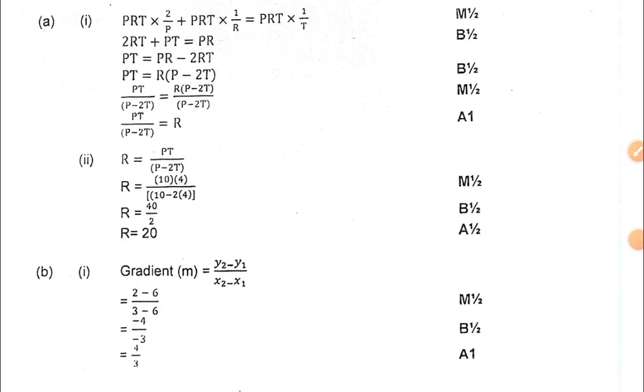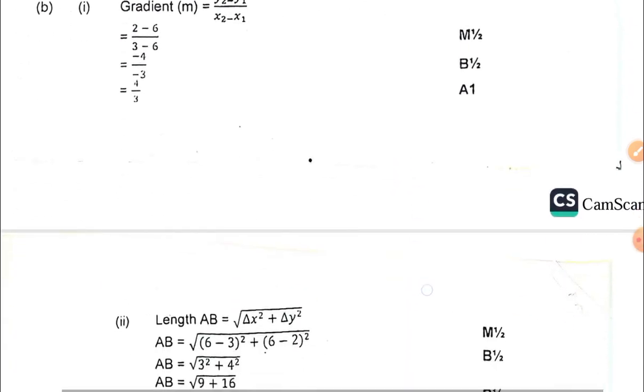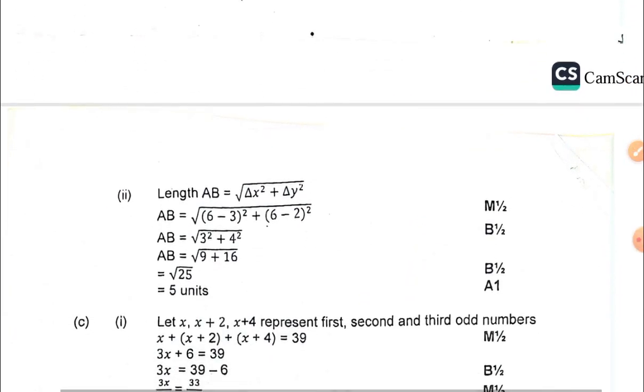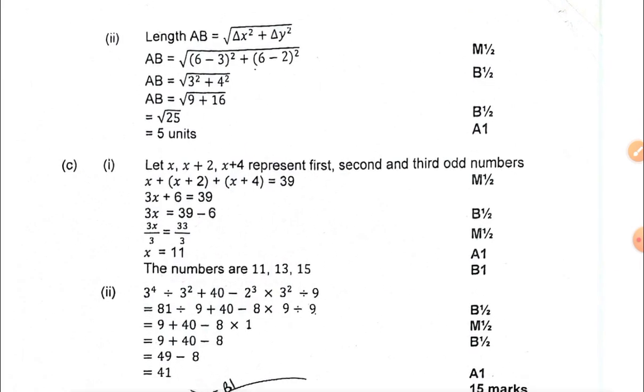Question four, part A has to do with change of subject, then part (ii) substitution. Part B coordinate geometry - you have to find the length of AB. Then part (ii) has to do with whole numbers involving whole numbers.